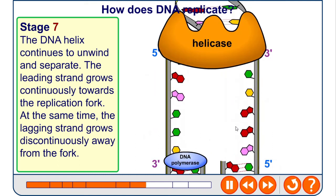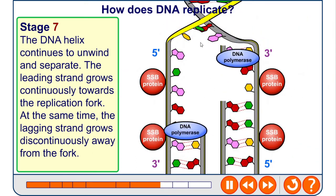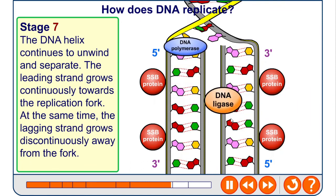The DNA helix continues to unwind and separate. The helicase enzyme moves along the replication fork, and these two processes continue all the way along the section of DNA.